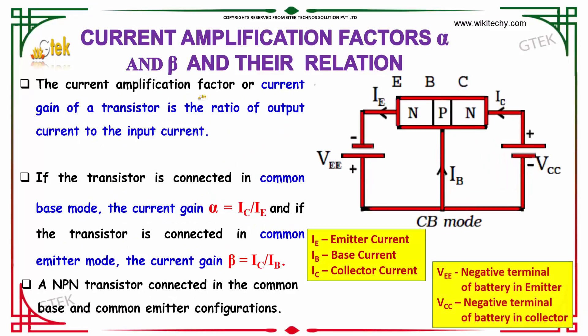The current amplification factor or current gain of a transistor is the ratio of the output current to the input current.